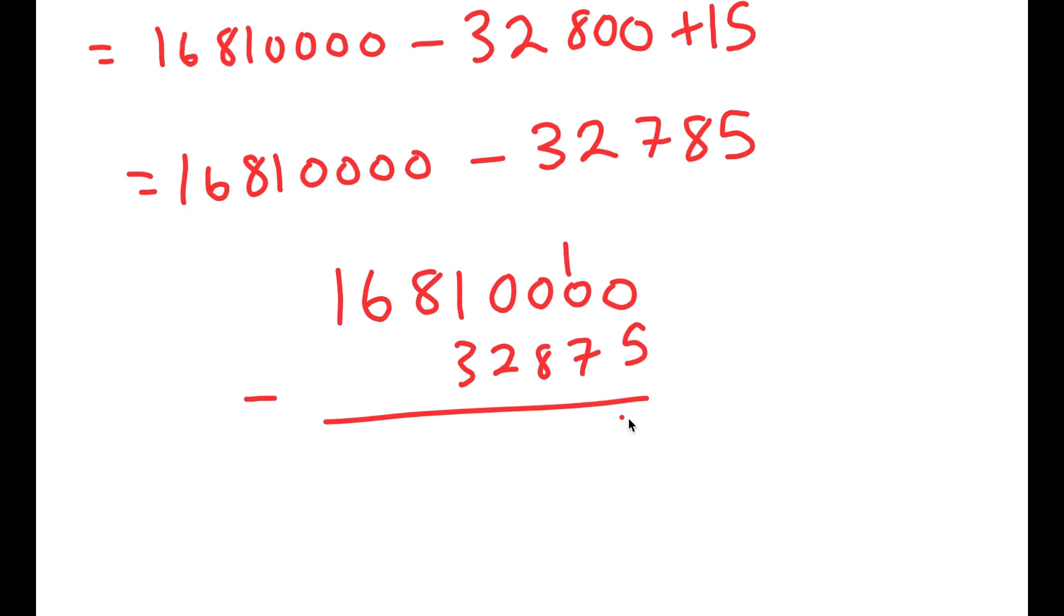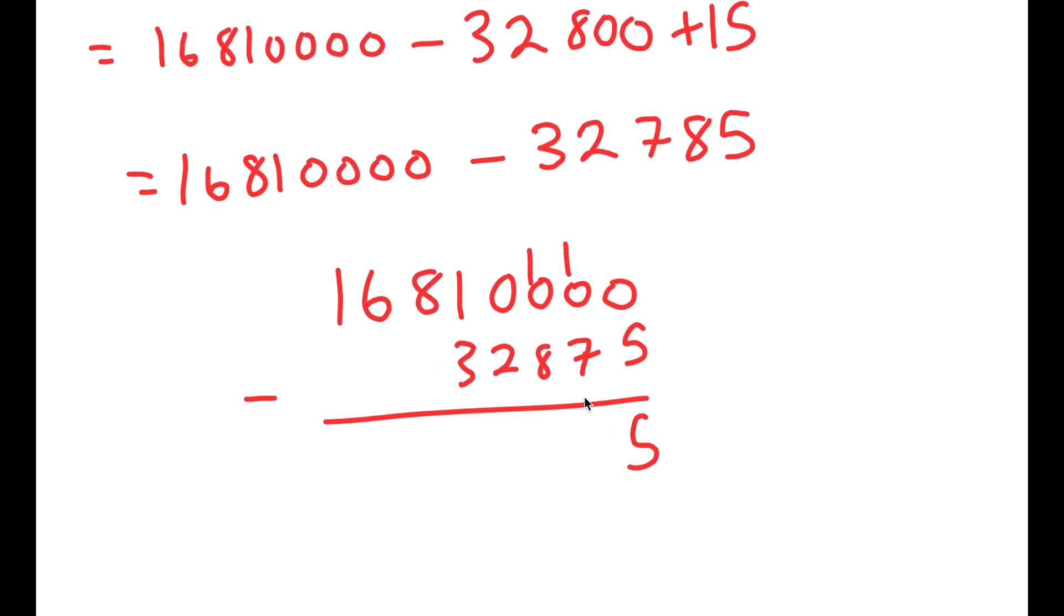So, 10 minus 5 is 5, 9 minus 7 is 2, 9 minus 8 is 1, 9 minus 2 is 7, 10 minus 3 is 8, 8 minus 1 is 7, and I have 6 and 1. So 16,787,125 is my final answer to this problem.